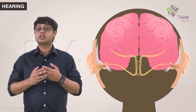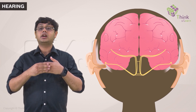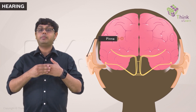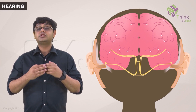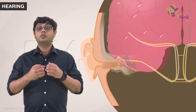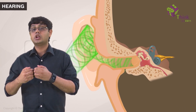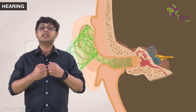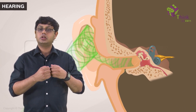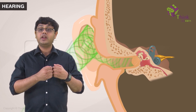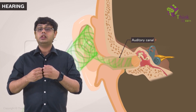Now, when we hear something, these sound waves are collected by our pinna. The pinna serves as a funnel which not only collects these waves but filters and amplifies them a little bit. The sound waves then enter the auditory canal.